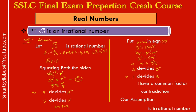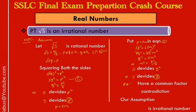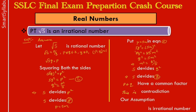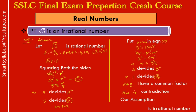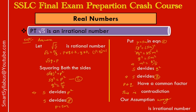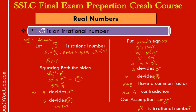So 5 divides both p and q — meaning p and q have a common factor of 5. But we started with the statement that p and q have only common factor 1, i.e., they are co-primes. Now we find their common factor is also 5, meaning they are not co-primes. This is a contradiction — we assumed something but got something different. Why did this contradiction arise? Because we assumed root 5 is a rational number — so that assumption is wrong.